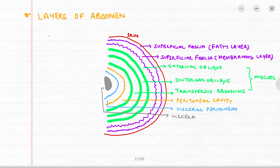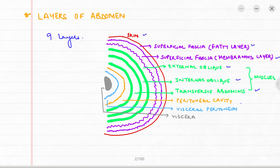The abdomen is divided into 9 layers. On the outside there is skin, then we have the superficial fascia which has two parts: the fatty layer and the membranous layer. Then we have three different muscles — the external oblique, the internal oblique, and the transversus abdominis — followed by the peritoneal cavity, then the visceral peritoneum, and lastly on the inside we have the viscera.